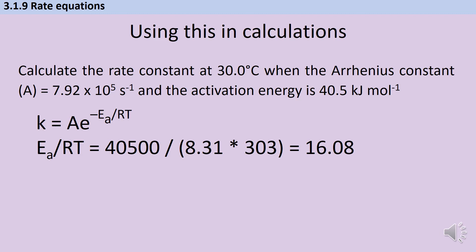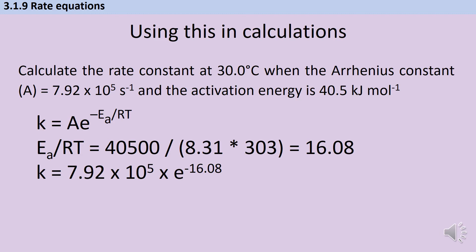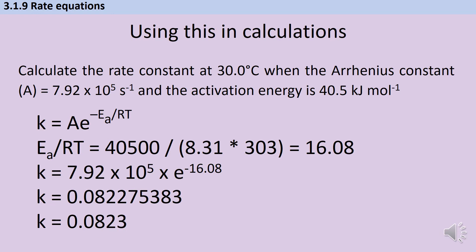That gives me a value for the index of negative 16.08, because the index is negative activation energy divided by RT. So I can now say that K is going to be 7.92 × 10⁵, which is my value of the Arrhenius constant, multiplied by E raised to the power of negative 16.08. Multiplying those together gives me this number, and it's important to give the answer to 3 significant figures, since the rest of the data in the question is given to 3 significant figures. The units for K are always the same as the units for A — so given that A has units of seconds to the minus one, my answer here is also seconds to the minus one.